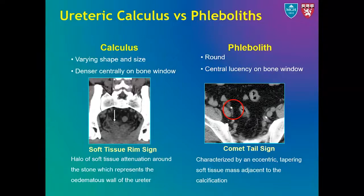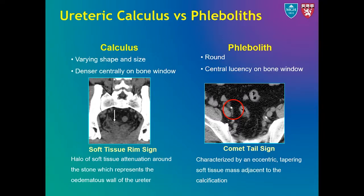One of the challenges with the diagnosis of distal ureteral stones is their differentiation from vascular calcification, particularly phleboliths. Ureteral stones are of varying shape while phleboliths are usually round. On bone window settings, stones show central dense areas while phleboliths have a central lucency. The soft tissue rim sign, which refers to a halo of soft tissue attenuation around the stone, is very specific for ureteral calculi. This soft tissue rim represents the edematous wall of the ureter. The comet tail sign, created by an eccentric tapering soft tissue area adjacent to the calcification, is a reliable feature in the diagnosis of phleboliths.